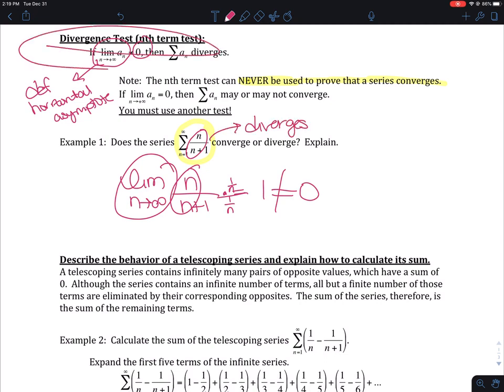And it diverges by the divergence test or the nth term test. On a free response test, I would expect that you tell me what test makes it convergent or divergent. So you would say that n equals 1 to infinity, n over n plus 1 is divergent by the divergence test.